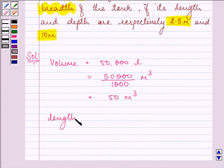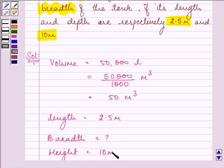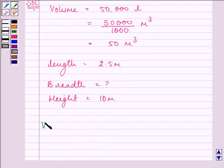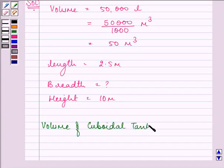Length is given as 2.5 meters, we need to find the breadth, and the corresponding height is 10 meters. The knowledge of the formula for volume of a cuboid will be helpful. In this case, it will be length times breadth times height.